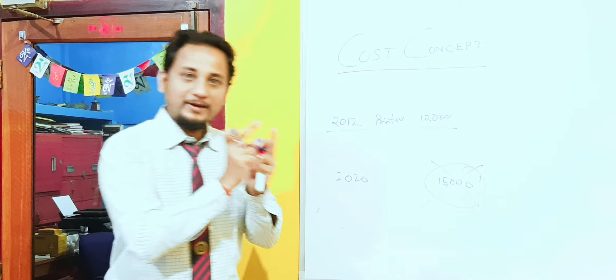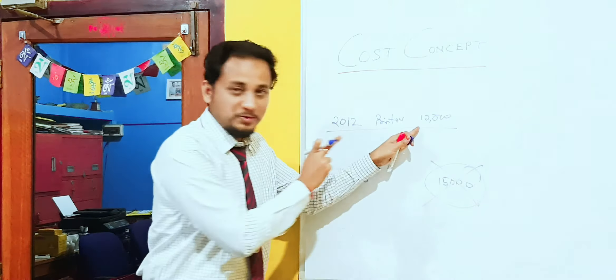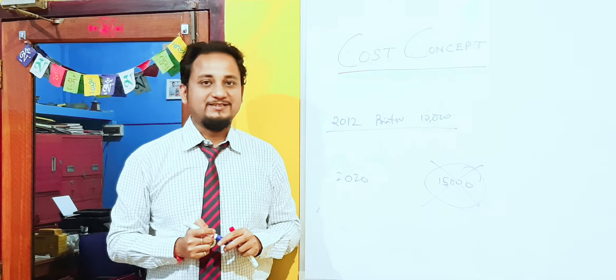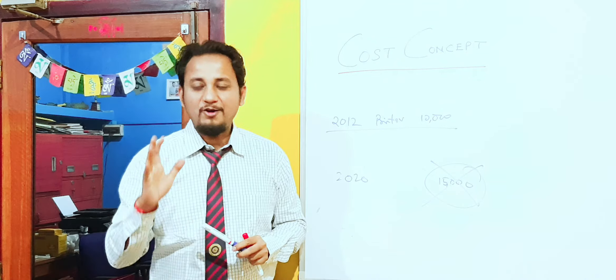Sometimes it moves up, sometimes it moves down. Market prices always fluctuate. That is called volatility. We are not going to consider this.